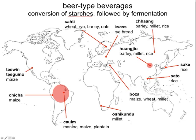Likewise, in Thailand there's a beverage called sato, also derived from rice. Moving westward, we come to Turkey and the beverage boza, which can be made of a variety of different grains ranging from corn — a New World grain — to wheat and millet as well. There's a Namibian beverage, oshikundu, made from millet.